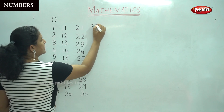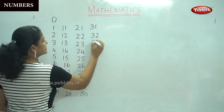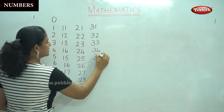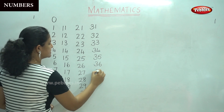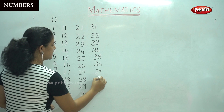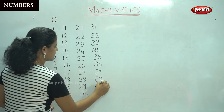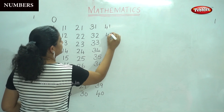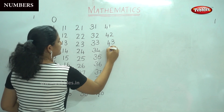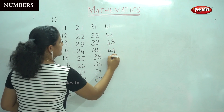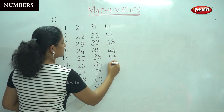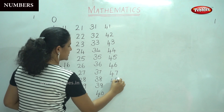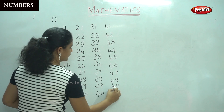31, 32, 33, 34, 35, 36, 37, 38, 39, 40, 41, 42, 43, 44, 45, 46, 47, 48, 49, 50.